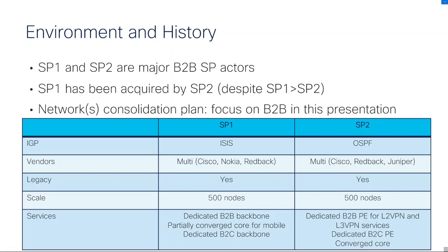SP1 and SP2 are service providers, both nationwide networks in the same country. SP1 was acquired by SP2 a few years ago. As part of this acquisition, the owners and shareholders want to consolidate the networks. This presentation is about the B2B interconnection. Both networks run different IGPs: SP1 runs ISIS, SP2 runs OSPF. Both networks are multi-vendor, with most common vendors in the industry, including Huawei.